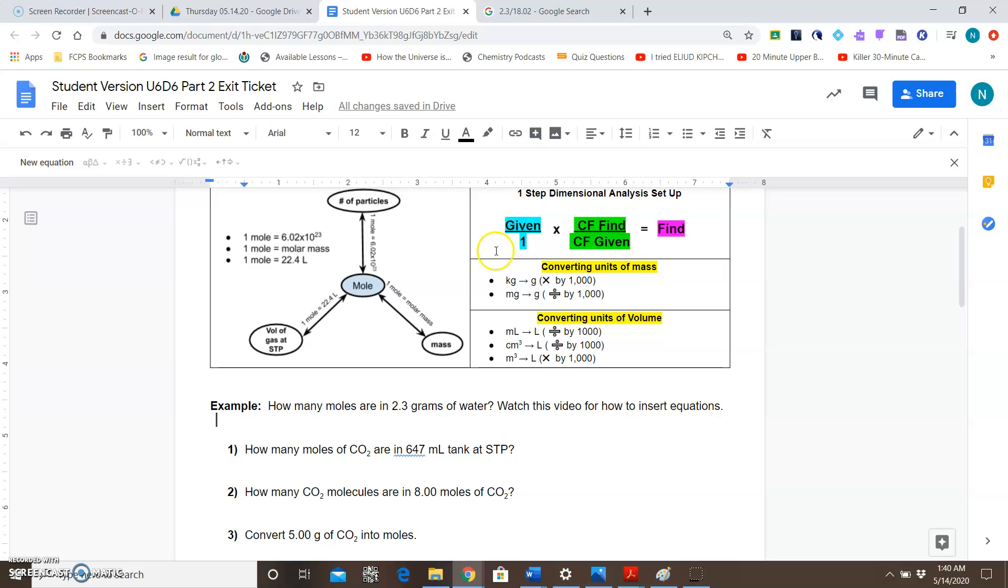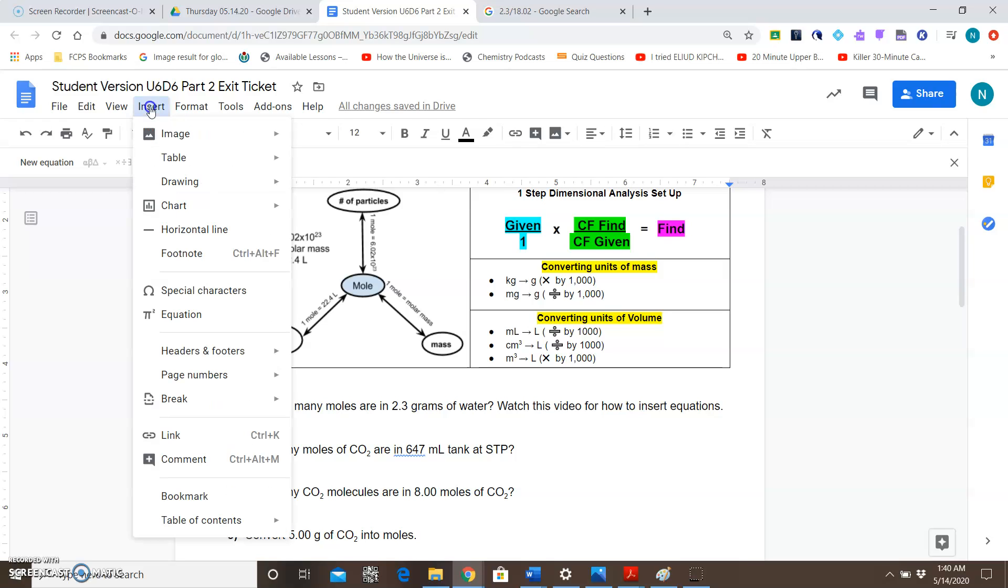And my work should look something like this, right? So I'm going to have two fractions multiplied together and then to equal my answer. So to start showing my work for that, I would go ahead and go to insert at the top, insert. And then you're going to scroll down to where you see equation that has the pi symbol.